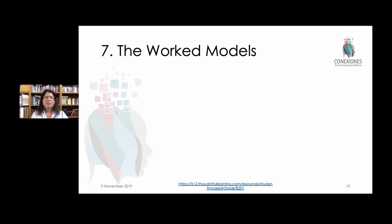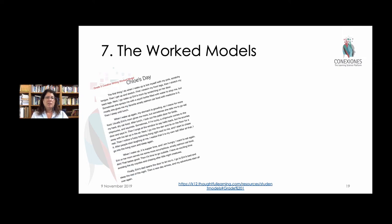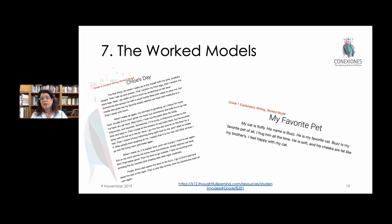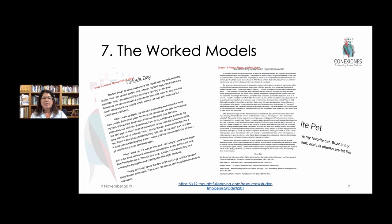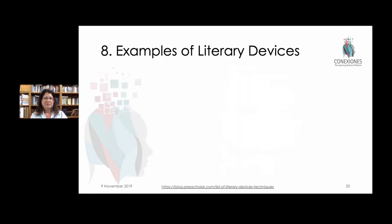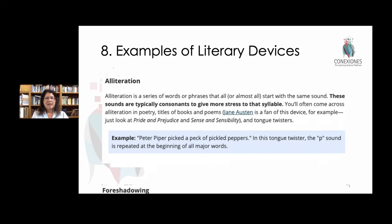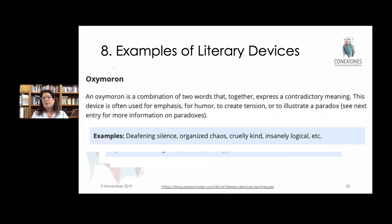A seventh tool we have are worked models of different writing genres. For example, a fifth-grade creative writing worked model — we've hyperlinked to others who have set up their worked models for different types and levels of writing. This permits a broader review of the type of information that might be looked for, or the level of writing expected at different grade levels and genres. An eighth tool has to do with examples of literary devices. There are more than 50 different literary devices — allegories, alliteration, foreshadowing, oxymorons. We've hyperlinked to others who have given lists and examples so that teachers and students have them easily accessible, and we've incorporated them into some of the activities within the Think-Write MBE model.